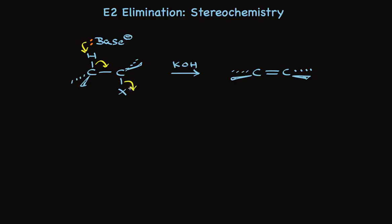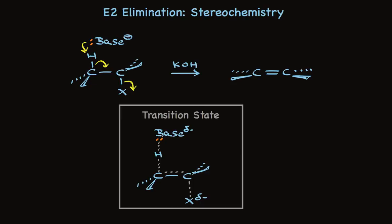When we look at the transition state for this concerted one-step reaction, it's clear that several of the atoms are in the same plane. The base, the proton, these two carbons, and the halide all are in the same plane, the plane of the screen.